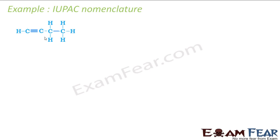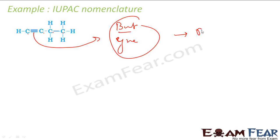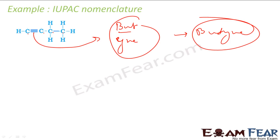Let us check this next structure. How many carbons? One, two, three, four — four carbons. So it is 'but'. Now find the number of bonds: if it has a triple bond, use 'yne'; if it has a double bond, use 'ene'; and if it has all single bonds, use 'ane'. So the name you get is based on combining the carbon prefix with the appropriate bond suffix.